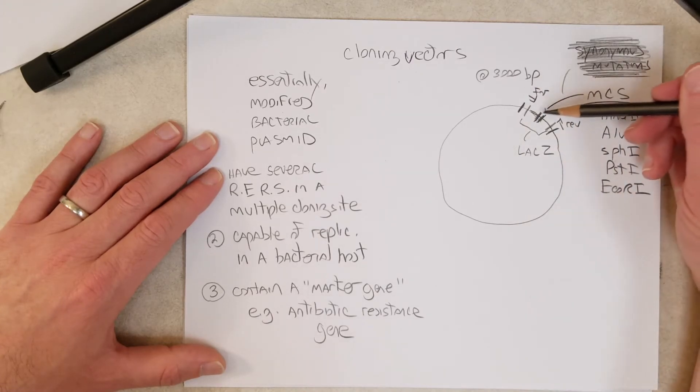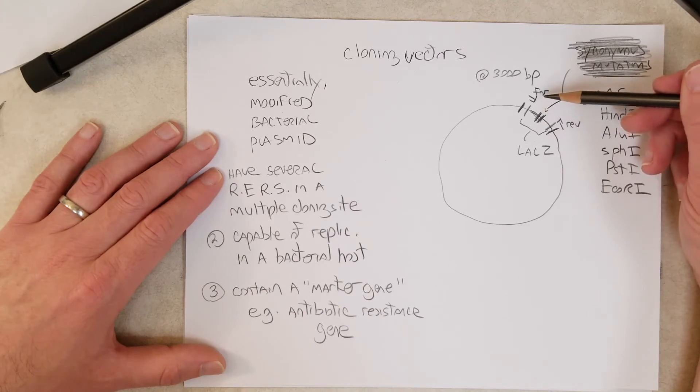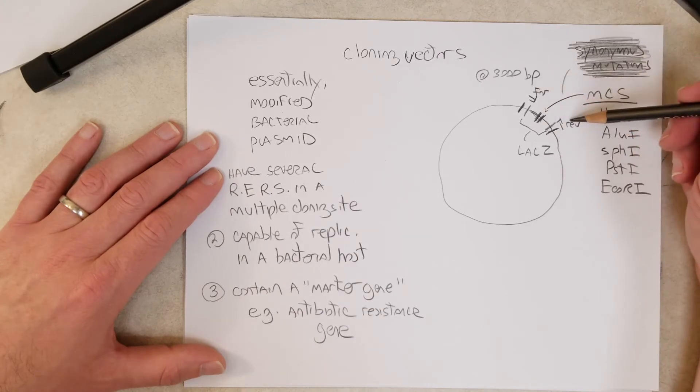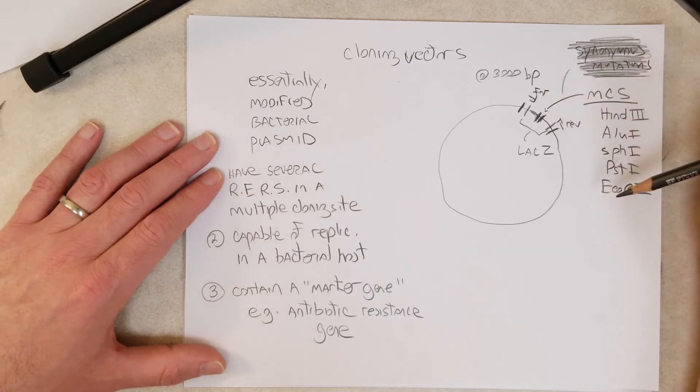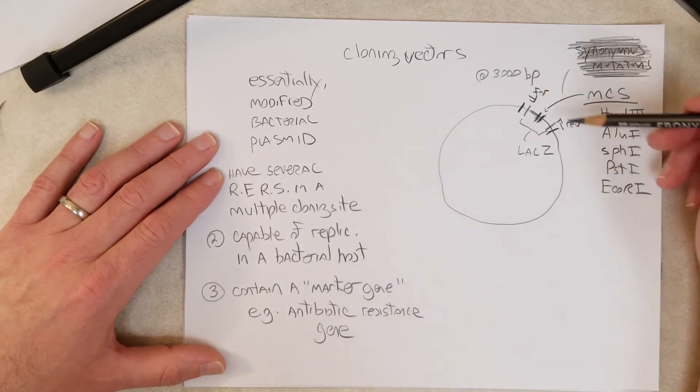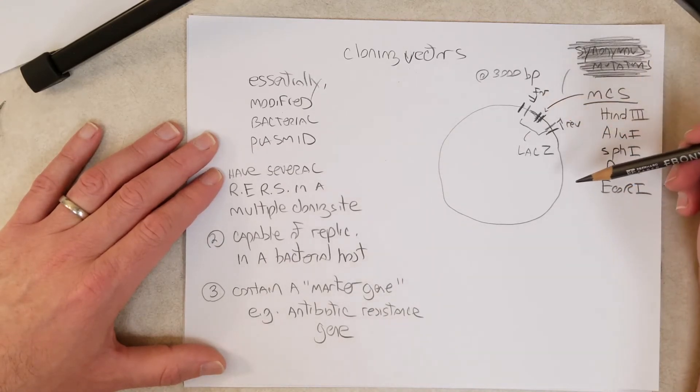If you put a gene in here, or any other DNA molecule, you could use PCR with the forward primer and the reverse primer to make many copies of that fragment that's inside the multiple cloning site.